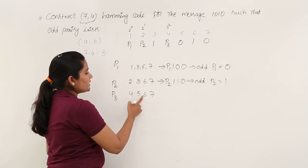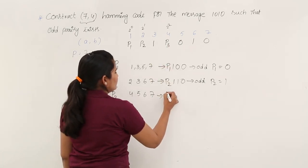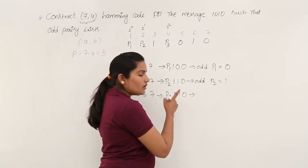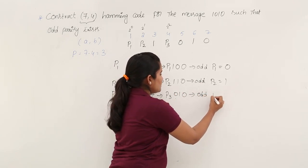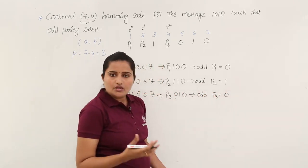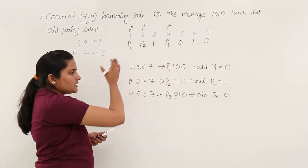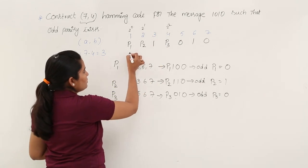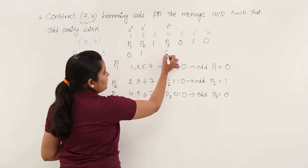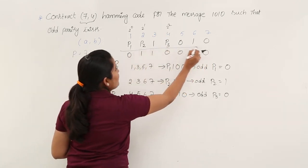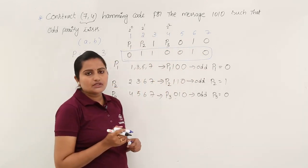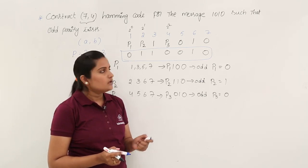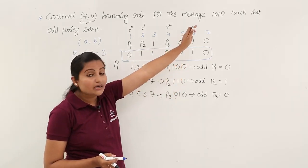Checking positions 4, 5, 6, 7 for P3: position 4 is P3, positions 5, 6, 7 are 0, 1, 0. This is already in odd parity, so P3 must be 0. We now have all parity bit values: P1 = 0, P2 = 1, P3 = 0. Placing these into the Hamming code structure gives the complete 7,4 Hamming code for message 1010. This is the Hamming code you would transmit using odd parity.